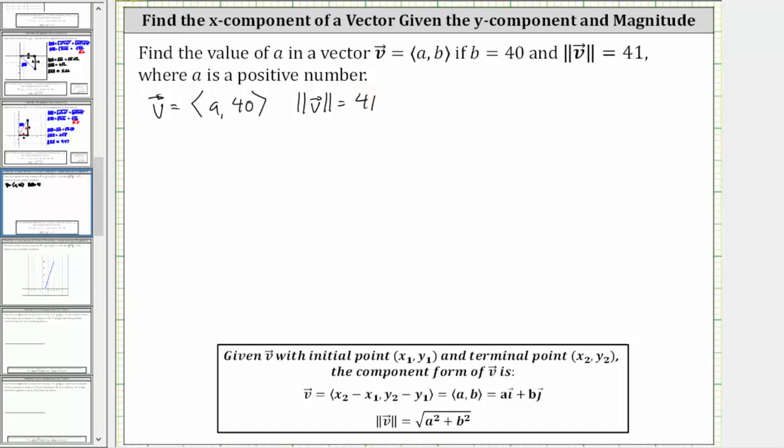But we also have a formula for the magnitude of a vector, which is given below. The magnitude of vector v is equal to the square root of a squared plus b squared. Let's use this formula, substitute the given values in, and then solve for a.